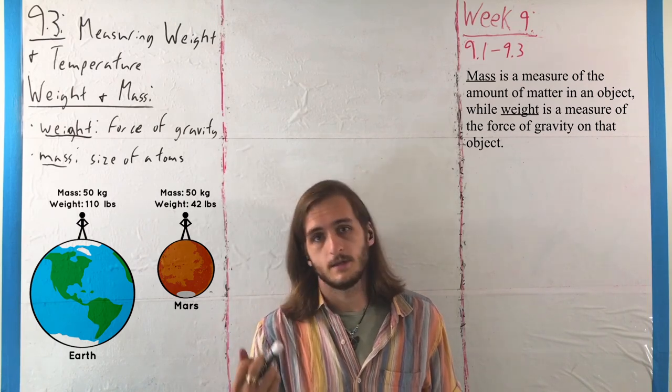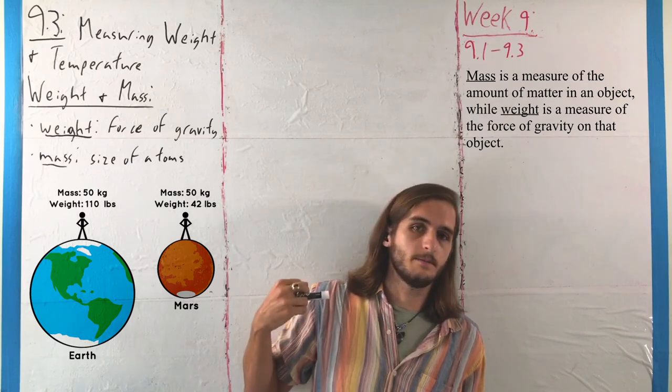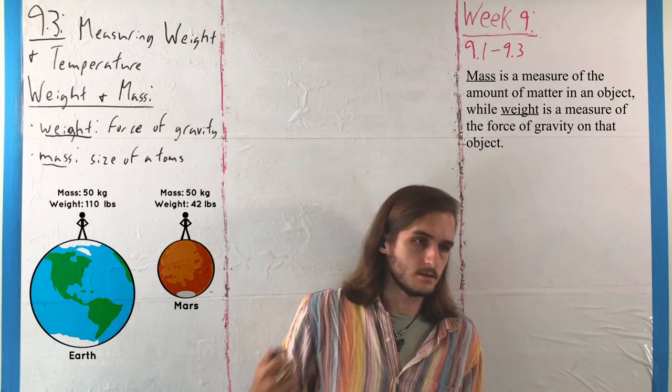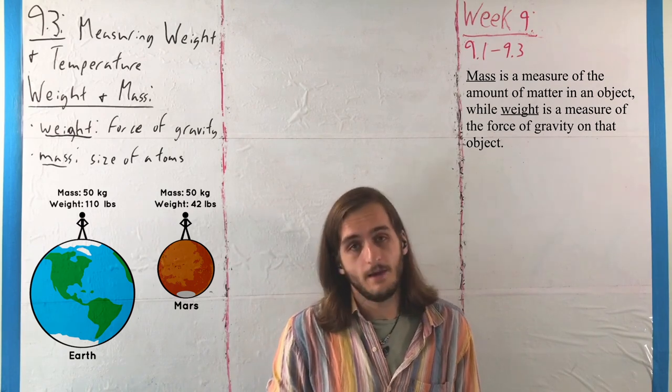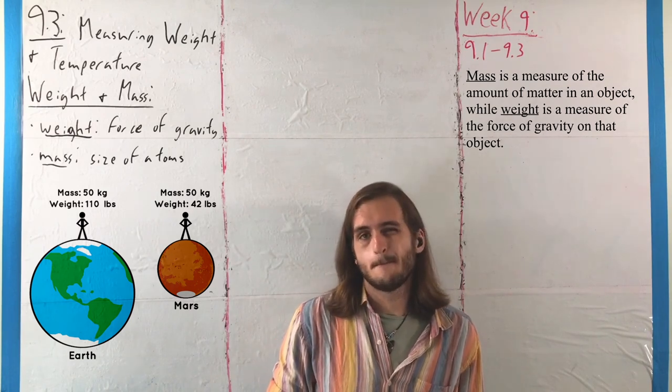On the moon, you would weigh significantly less, whereas on a much larger object, like say the sun, you couldn't survive on the surface of the sun, but if you could, you'd be much heavier because the sun is much bigger.